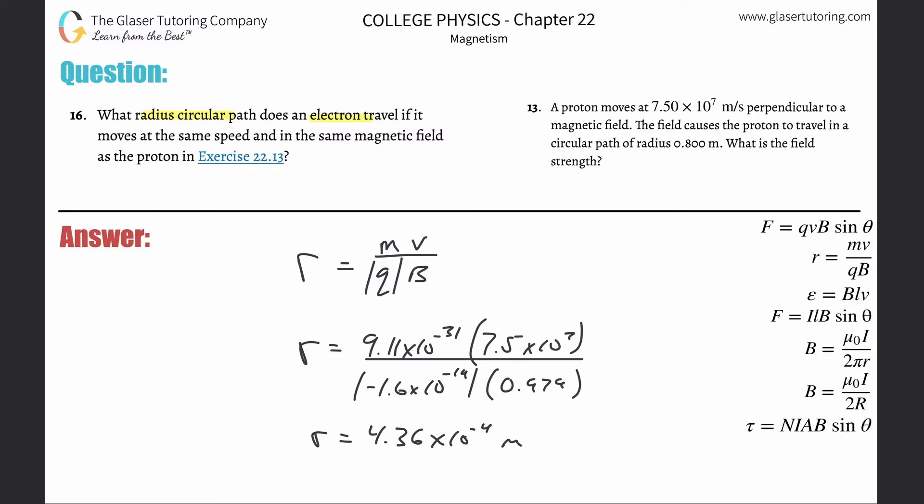If you notice, the circular path before was about 8.8 meters, and now it's almost a thousand times less. Why is that the case? Well, the mass of an electron is like a thousand times less than the mass of a proton, roughly.